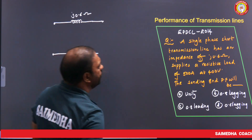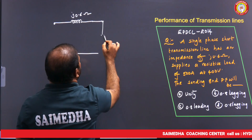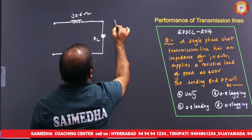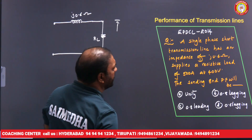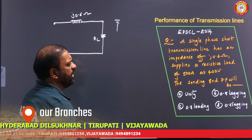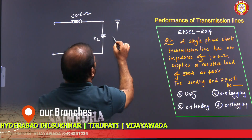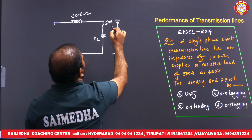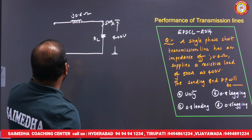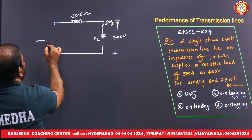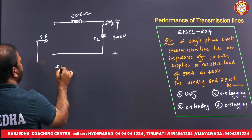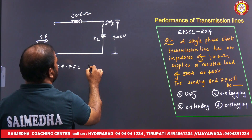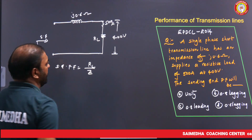The line supplies a resistive load RL at 400 volts with 500 amperes current. The load resistance RL = V/I = 400/500 = 4/5 = 0.8 ohms. The sending end power factor is R/Z, where Z is the total impedance.